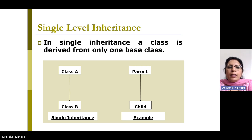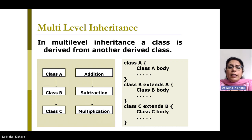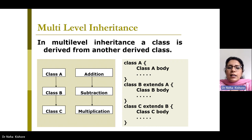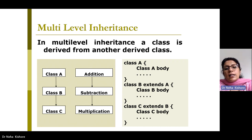Multi-level inheritance is when a class is derived from another derived class. For example, class A inherits class B, and class B further inherits class C. In code: class A { }, class B extends A { }, class C extends B { }. So A feeds B, and B feeds C — that is multi-level inheritance.